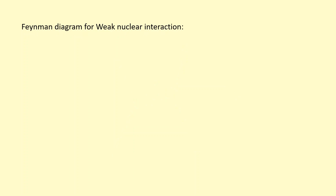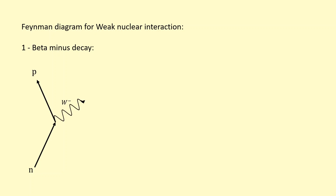We need to know the Feynman diagrams for the weak nuclear interactions. Let's start with beta-minus decay. A nucleus has too many neutrons, and that neutron is going to turn into a proton. But the proton is positively charged, so in order to conserve charge we need to have something negative being emitted as well. In this case, it's going to be the W-minus boson, which is the exchange particle for the weak nuclear interaction. The W-minus boson is going to turn into an electron, which gets emitted from the nucleus. The proton stays inside the nucleus, and now we need to conserve lepton number, so we need to have an antilepton — the electron antineutrino.